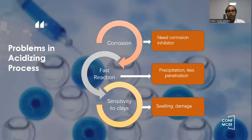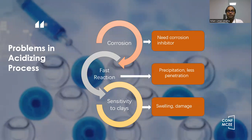But there are some problems with acidizing. For example, corrosion, fast reaction, and sensitivity to clays, which should be considered while doing the acidizing process. For corrosion, we need a corrosion inhibitor. For fast reaction, we need to dilute the acid, and for sensitivity to clays, we need to avoid the use of acid to which clays are sensitive.